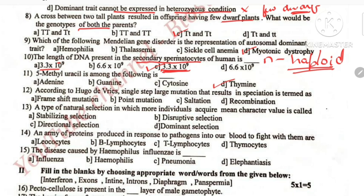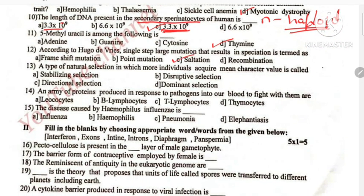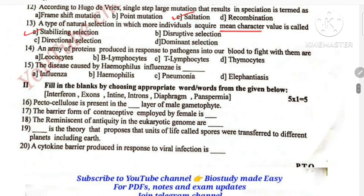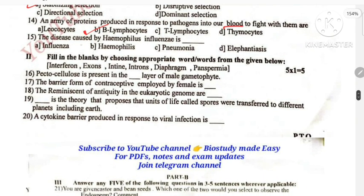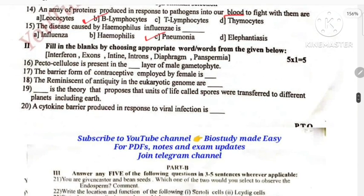Five-methyl uracil is thymine. Thymine is a single-step large mutation — that is saltation. Natural selection means character acquired. Stabilizing selection. Army of proteins produced in response: blood will produce antibodies via B-lymphocytes. Haemophilus influenzae — pneumonia. Barrier contraceptive for female — diaphragm. Eukaryotic genome has exons and introns. The theory that proposes panspermia. Cytokine barrier in response to viral infection — interferons.